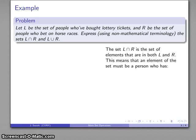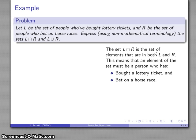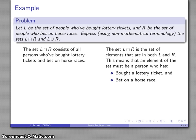Well, we can start off as follows. The set L intersect R is the set of elements that are in both L and also in R. And what this means is that this set is going to include people who have bought a lottery ticket and also have bet on a horse race. Now, I can describe that fairly easily in English. The set L intersect R consists of all persons who've bought lottery tickets and also have bet on horse races.